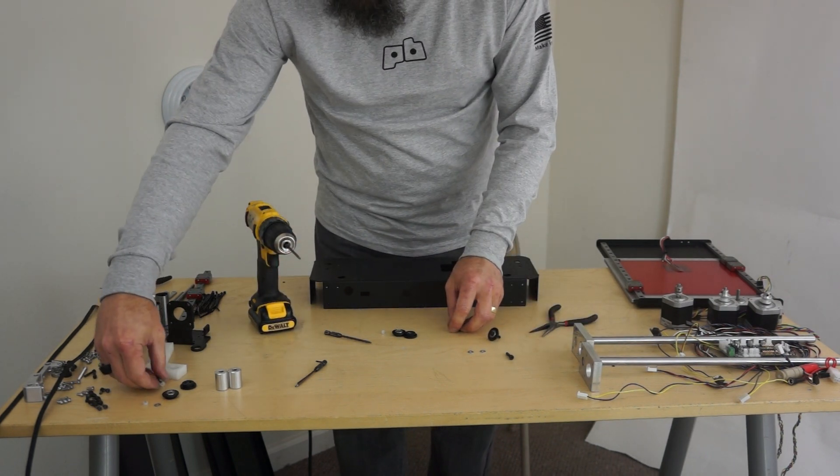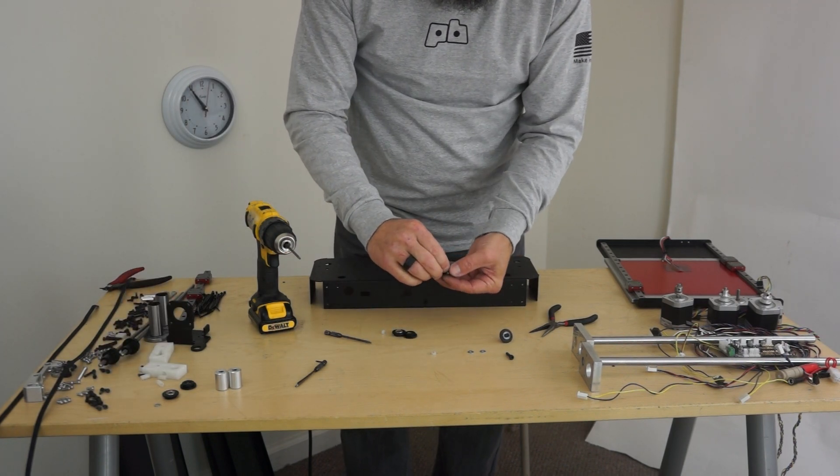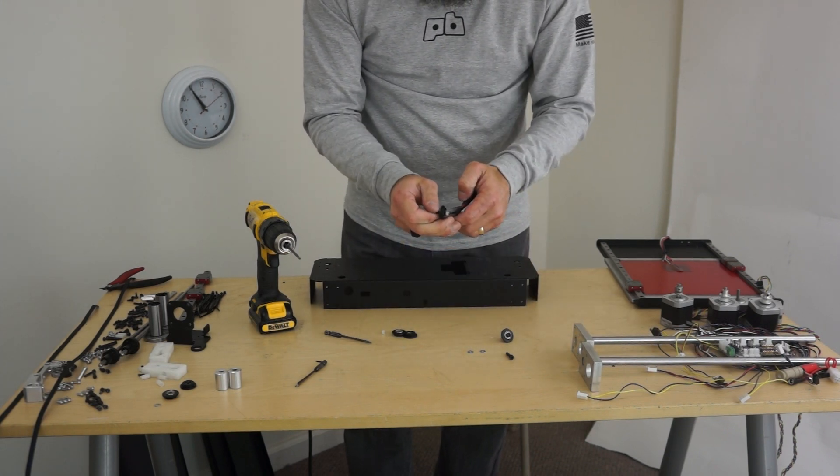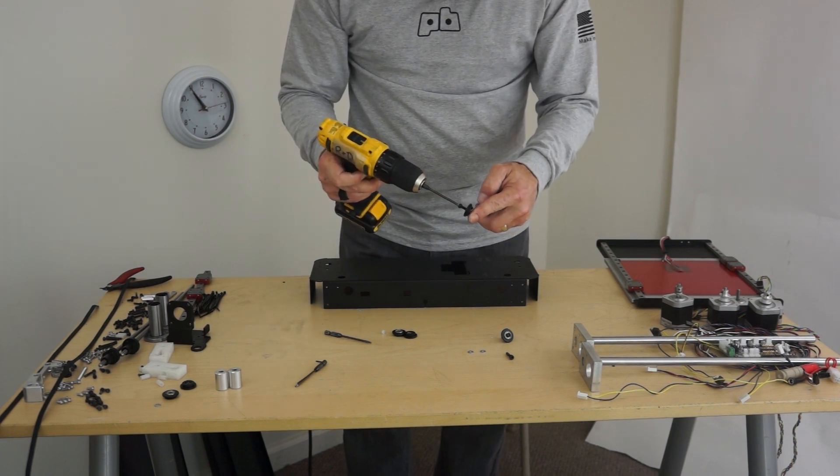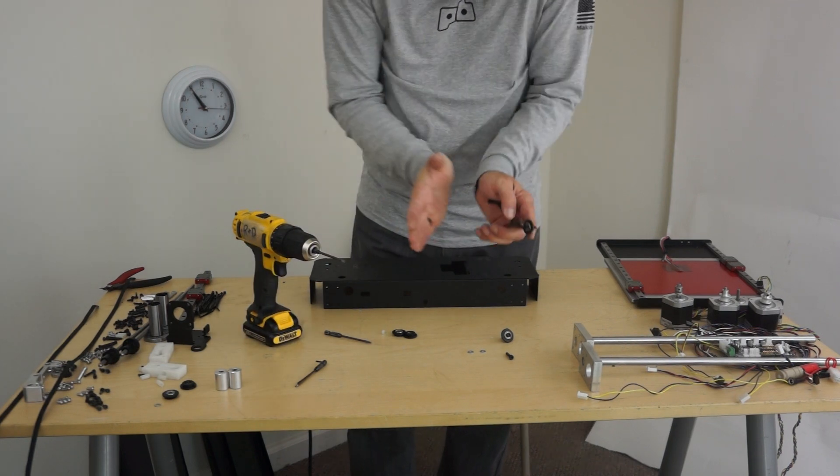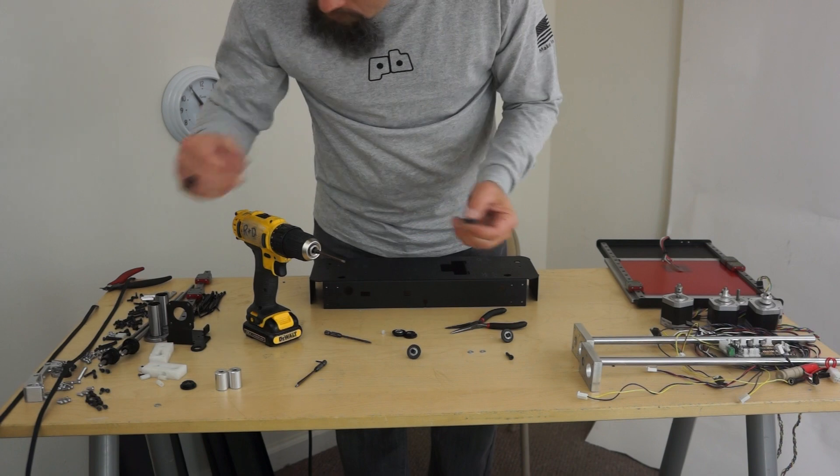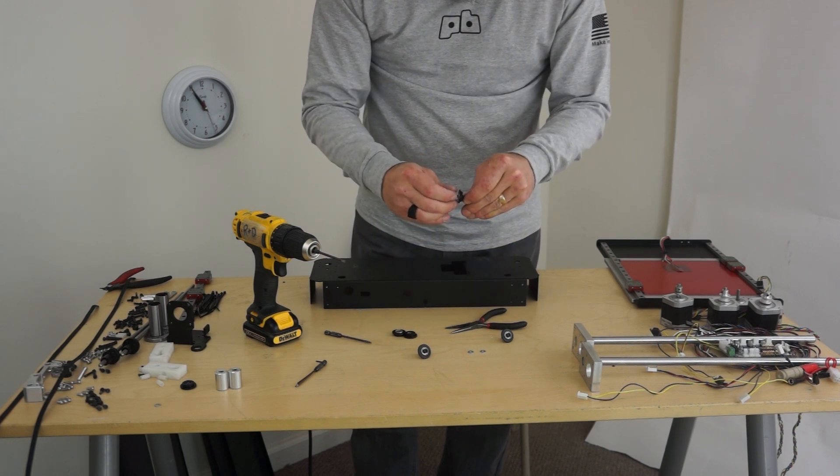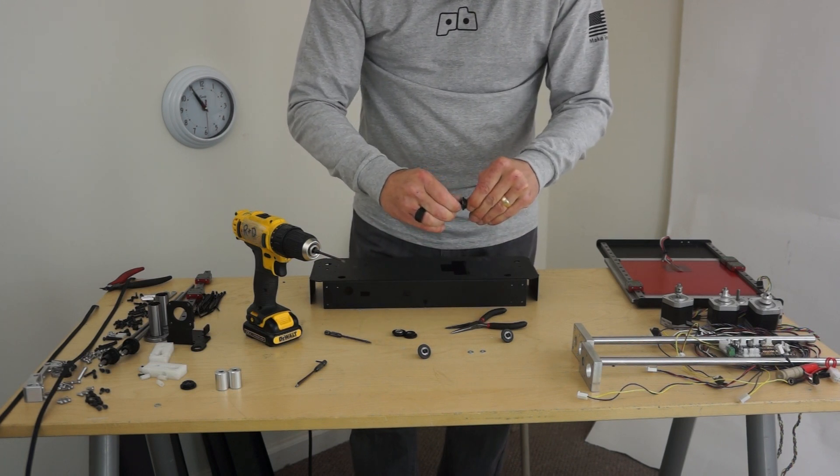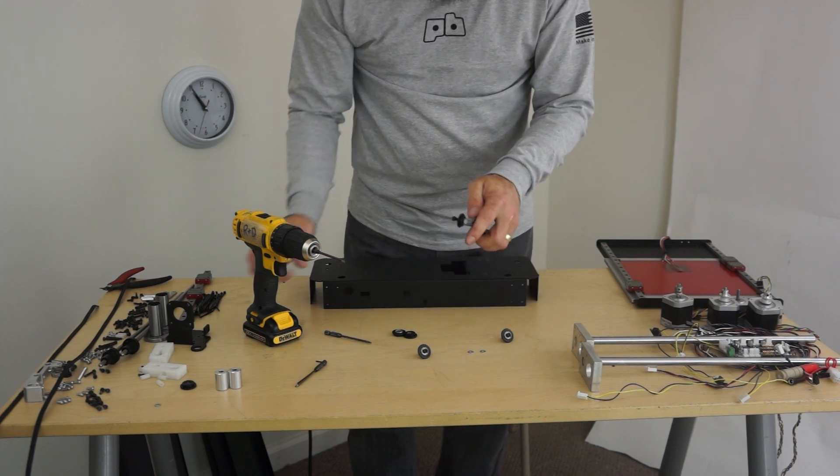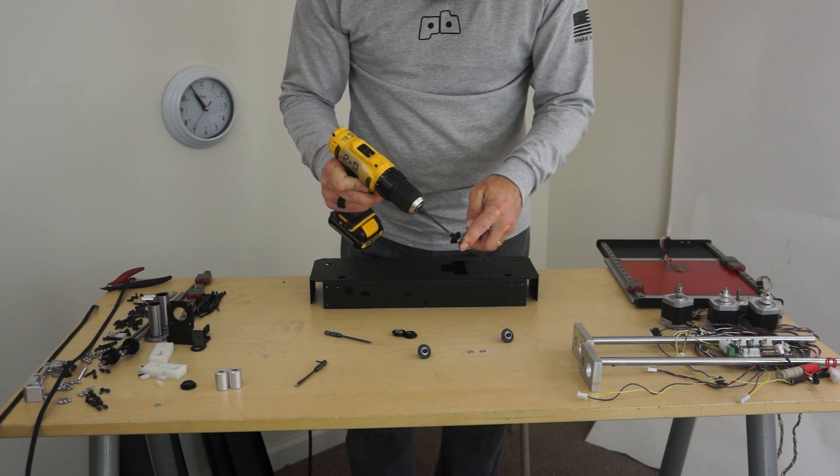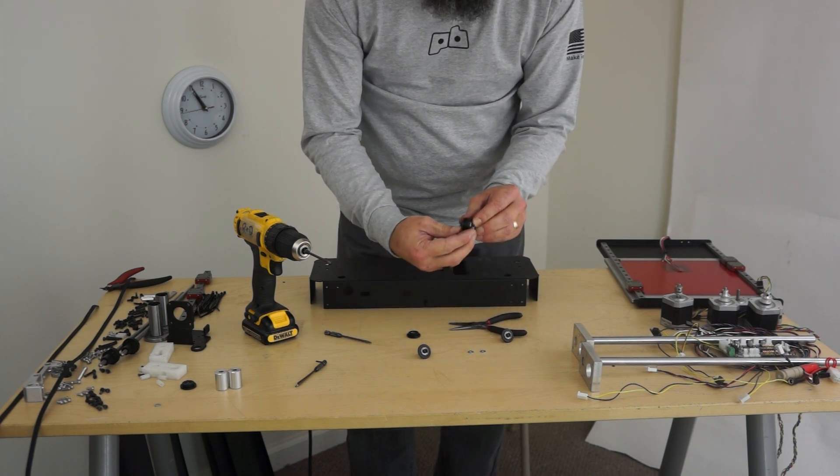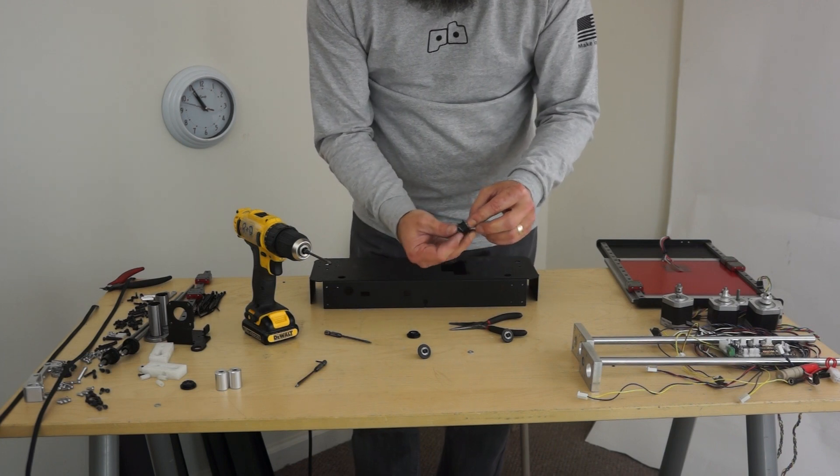While I'm at it, I'm gonna prep my other pulleys so I don't have to do this each time. A spacer goes in between these bearings because you don't want to squeeze it so hard that it caves in. That little spacer keeps it from caving in. Two of these are going on this base, one of them is going on the X carriage. Then it clamshells and one of these little M4 washers.